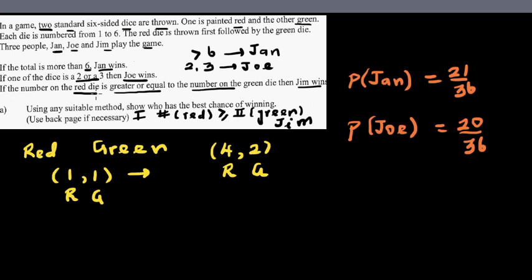Now for the last, I want you to do that yourself. If the number in red die is greater than equal to the number on the green die, I already worked that out for Jim. It would be again 21 out of 36. So here the probability of Jan and Jim winning is greater than Joey. So the best chance of winning is for Jan and Jim, and the lowest chances Joey.